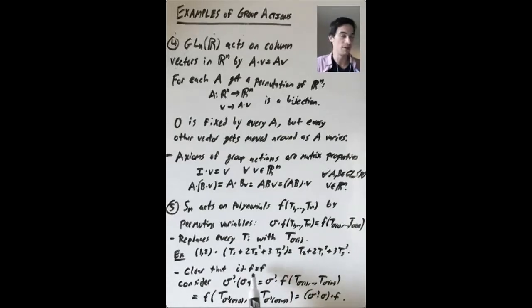Okay, so it's clear that the identity permutation fixes every polynomial. So what else do we need to check to make sure that this really is a group action? Well, what happens if we take the permutation sigma prime acting on sigma acting on F? We have sigma prime is out here, but we have F of t sigma 1 up through t sigma n. And sigma prime is just going to permute these variables. Whatever these variables are, it's going to apply this permutation sigma prime to them.